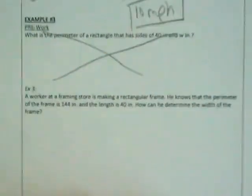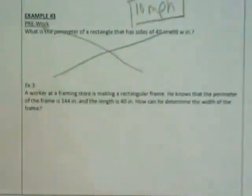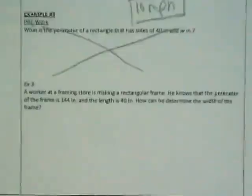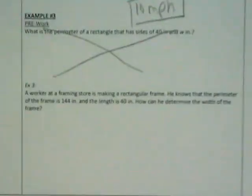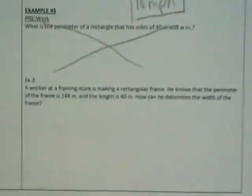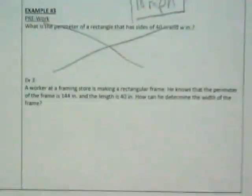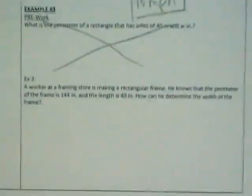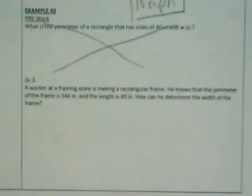Cross this part off, and we're going straight into example three. A worker in a framing store is making a rectangular frame. He knows that the perimeter of the frame is 144 inches, and the length is 40 inches. How can he determine the width of the frame?